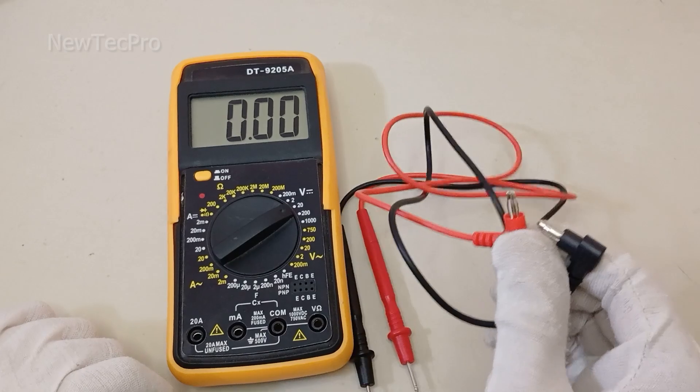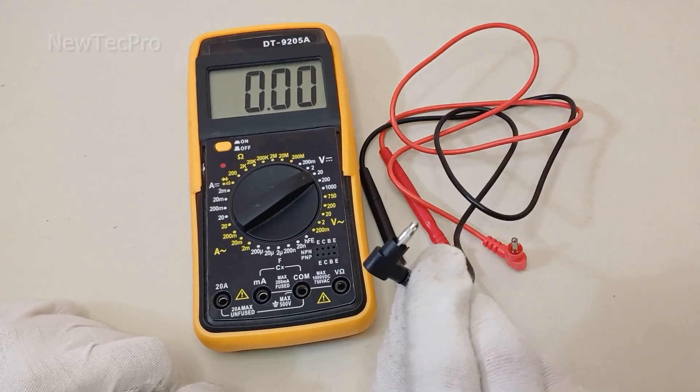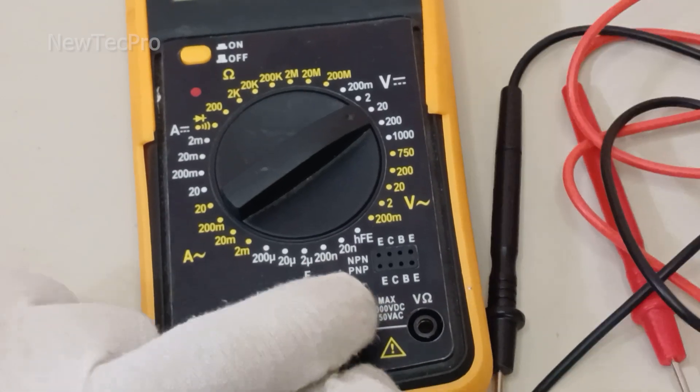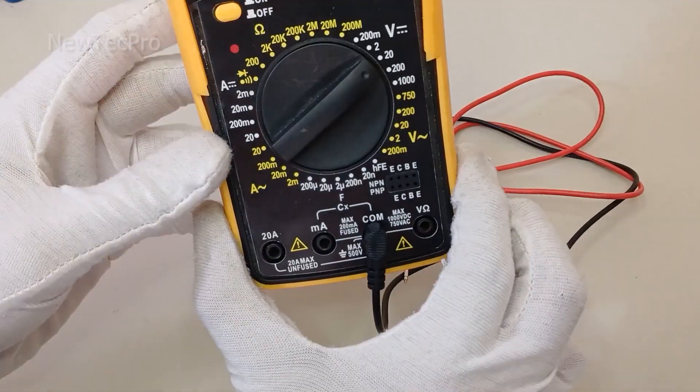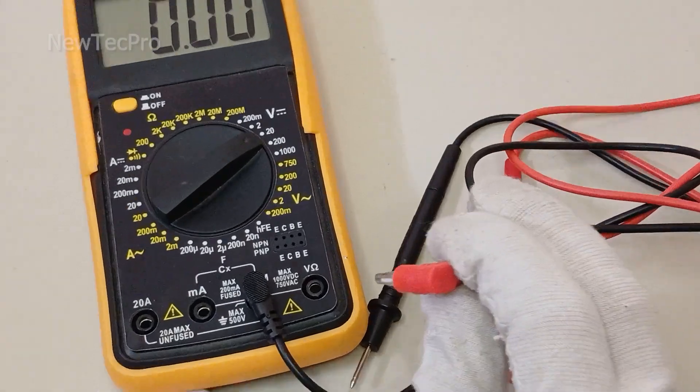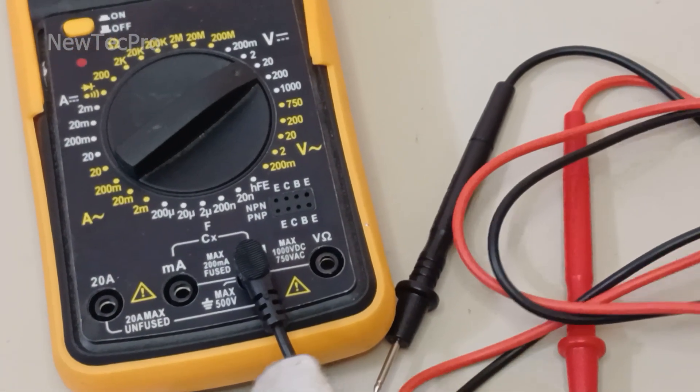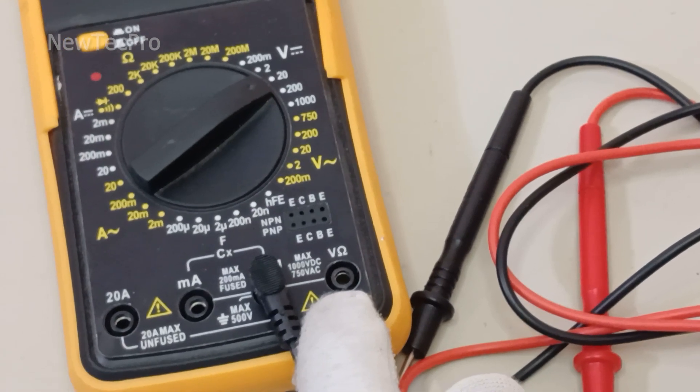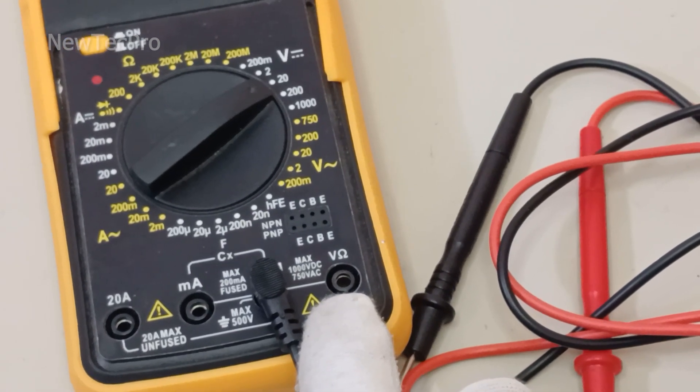Insert the black negative probe to the COM port, and the red positive probe into the port labeled for voltage, usually marked with the V.